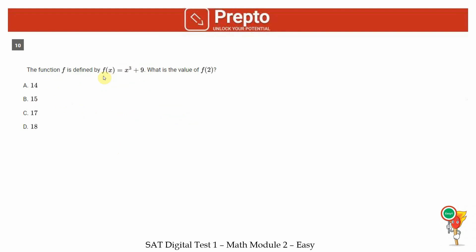Tenth question. The function f is defined as x cubed plus 9, what is the value of f of 2? So I just replace x with 2 and I get 2 cubed plus 9, which is 8 plus 9, and that is 17 option C.